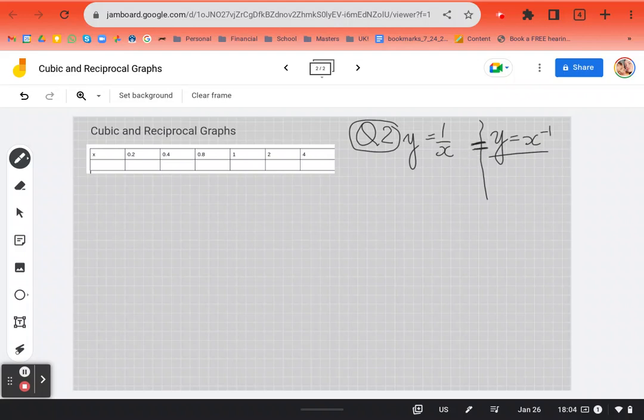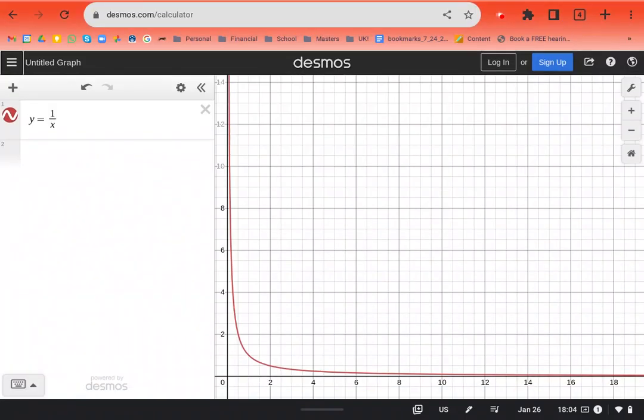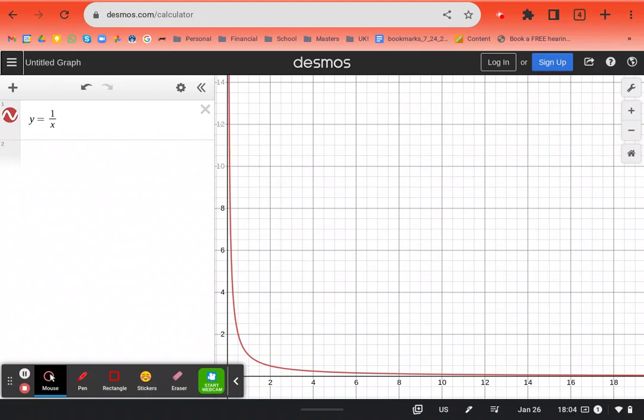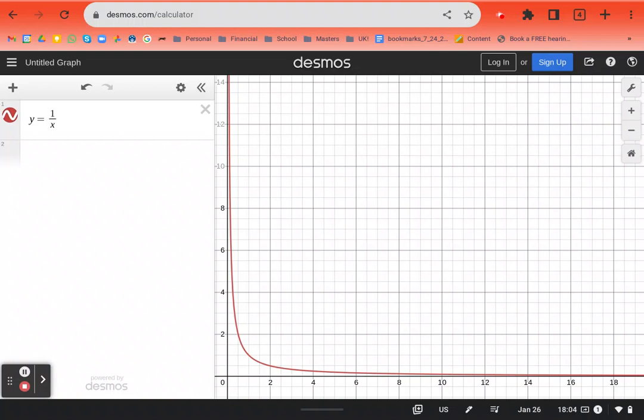Before we go any further, let's look and see what does our new type of graph look like? Because we've done line graphs, we've done parabola graphs. So we're going to scoop over to the Desmos graphing calculator, and I typed in y equals one over x. And this is what it looks like. Okay, good. Doesn't look like a parabola.